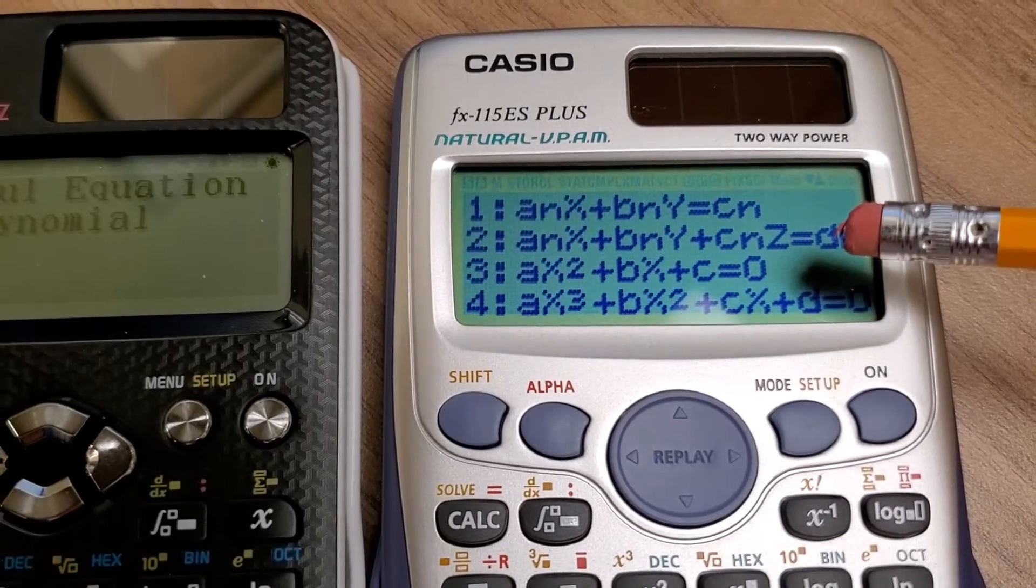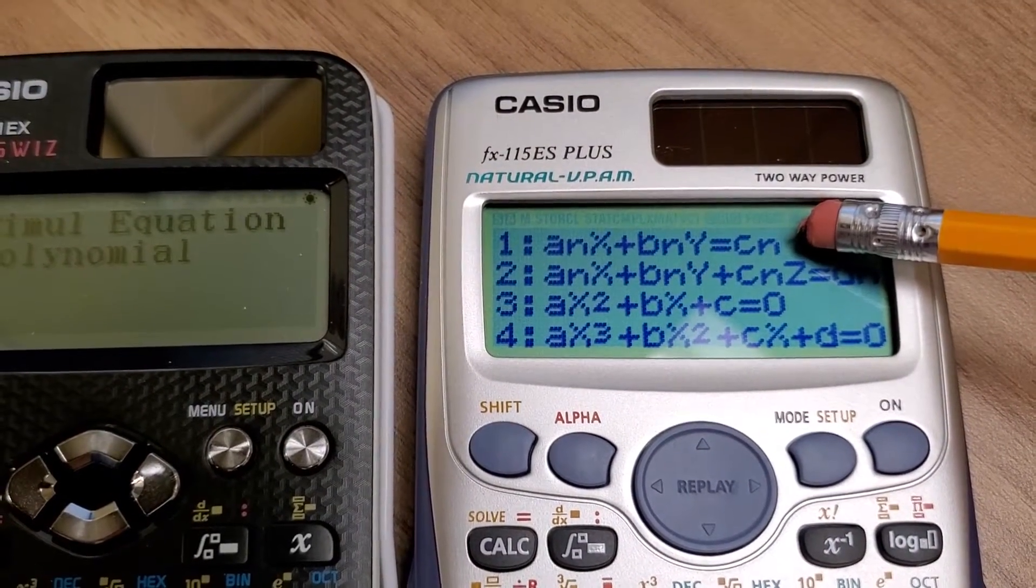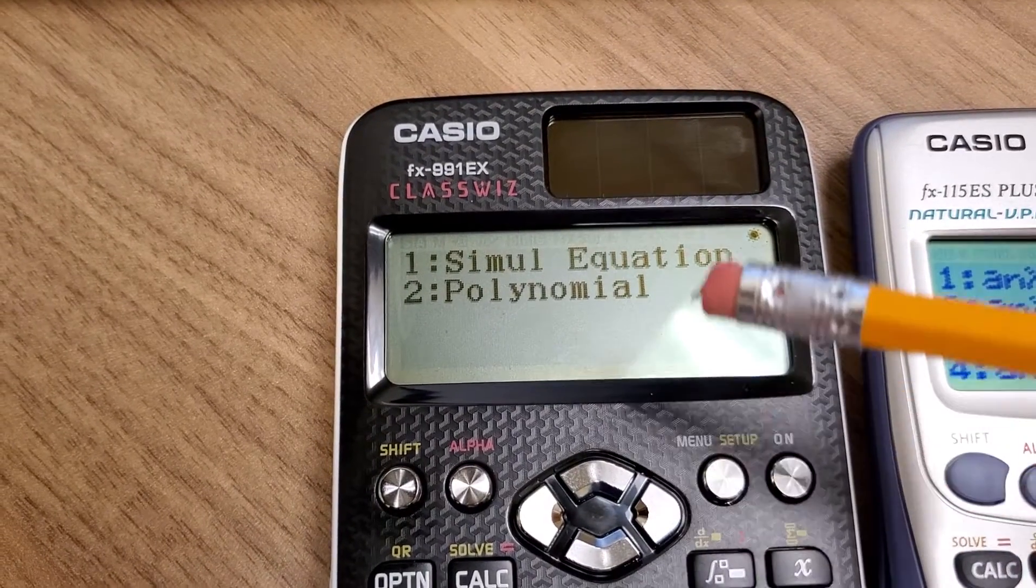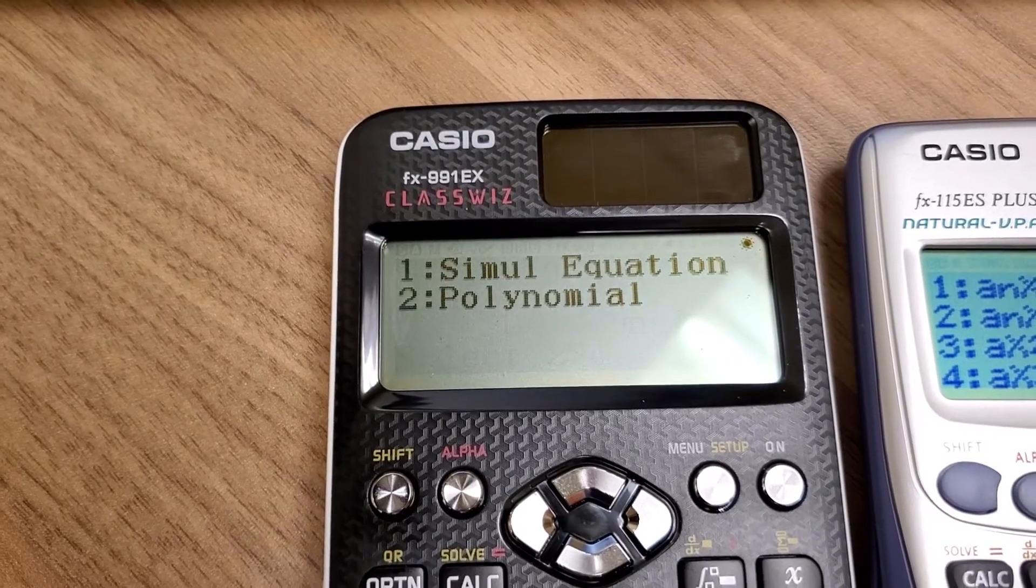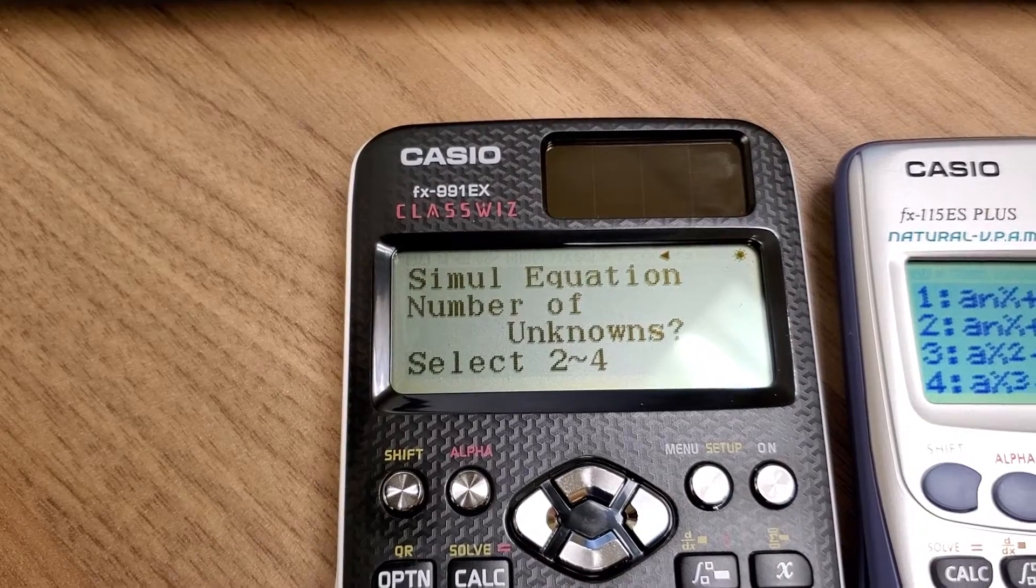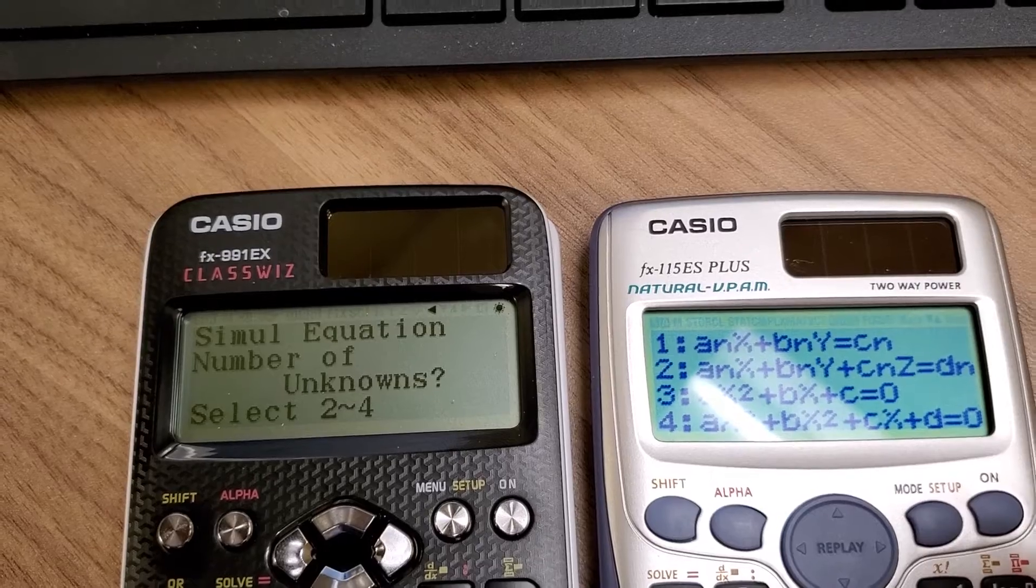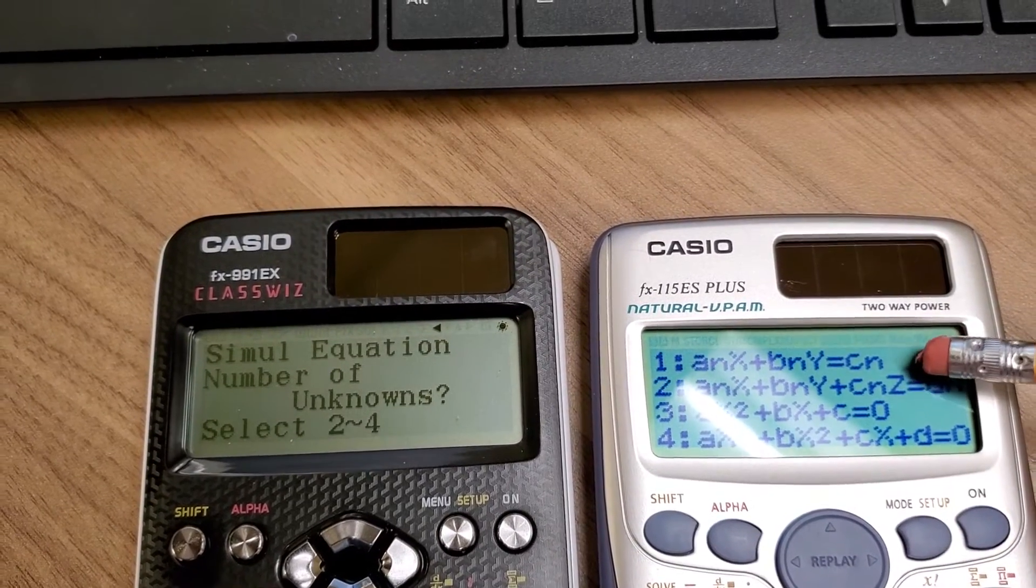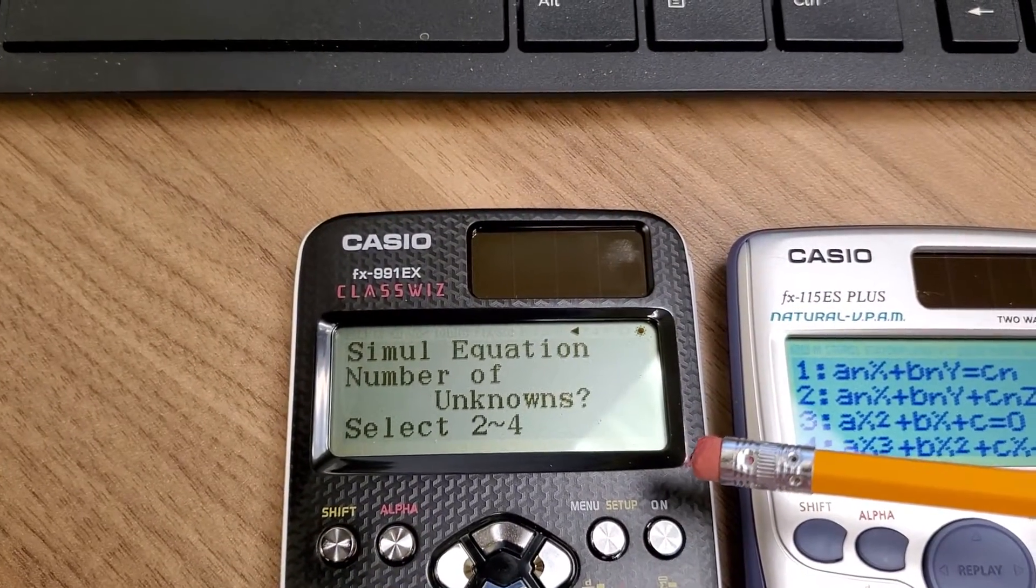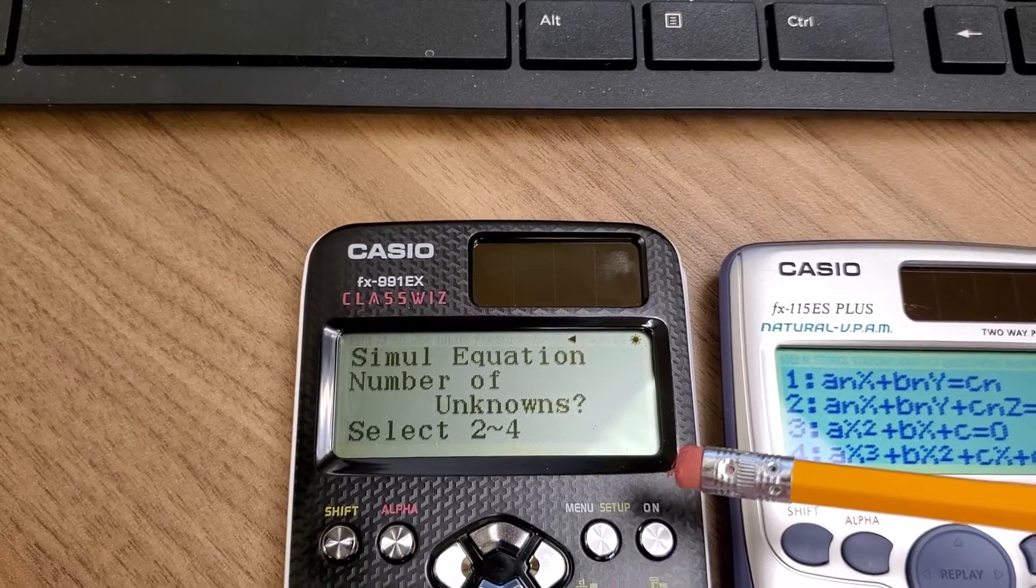So the FX-115ES Plus can solve a system of equations in two or three variables. If you look at the ClassWiz system of equations, it's going to give you an option to choose how many unknowns up to four. So that's an advantage over the 115ES Plus. The 115ES Plus can handle only two or three variables, where the ClassWiz can handle two, three, or four variables. So that's a difference.